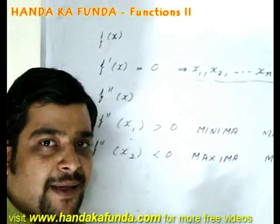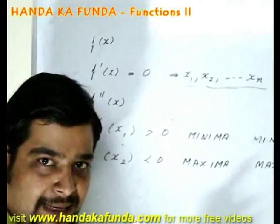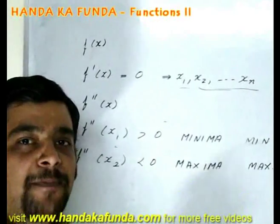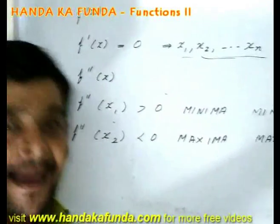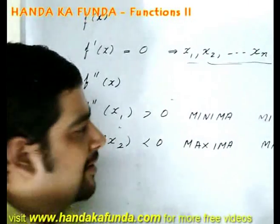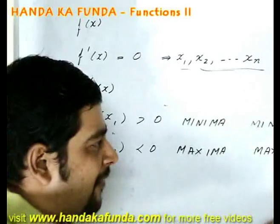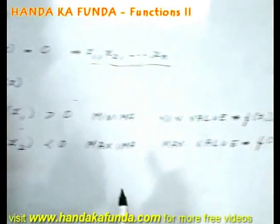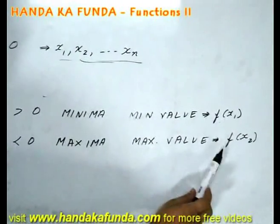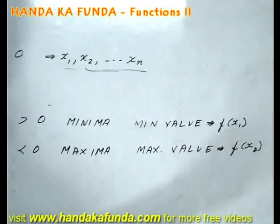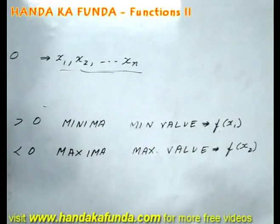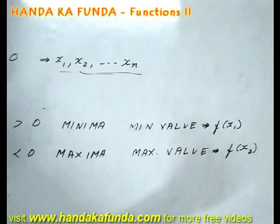What I am going to do is suppose I got 10 roots. Then there will be 5 maximas and 5 minimas. Is it necessary? Yes. Because between any two minimas there should be a maxima. Between any two maximas there should be a minima. I will find out all the minimum values by putting them in, and I will find out all the maximum values by putting them in the original function. The biggest of those values is going to be my global maxima. The minimum of those values is going to be my global minima.